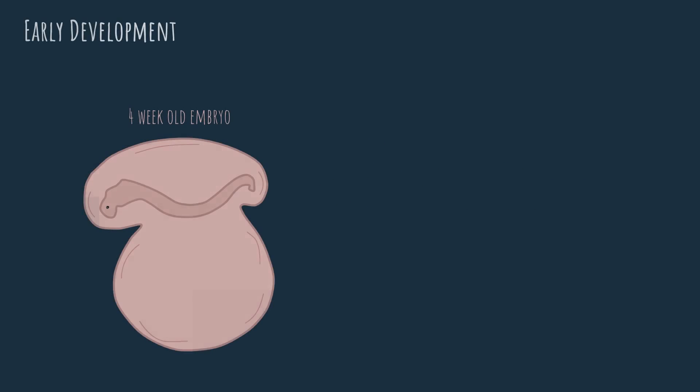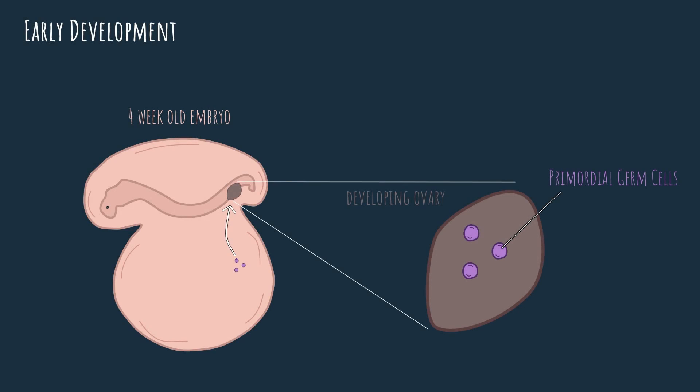So let's bring in the embryo. She's about four weeks old now and she has this funny shape. Around this time, a group of cells called the primordial germ cells begins to migrate towards the developing ovaries. For now, it doesn't really matter where and how the primordial germ cells are formed — just remember that they exist and migrate towards the developing ovaries.